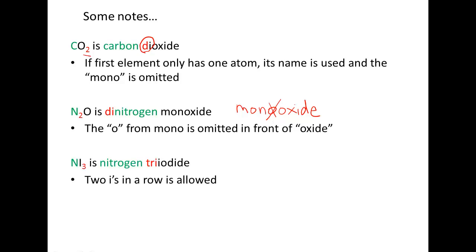Our third example is another one that may look odd to you. And that is nitrogen triiodide. So nitrogen does not get a prefix, once again, because it's the first element and there's only one of them. And then iodine gets the prefix tri because there's three of them. And notice you have two i's in a row. This is allowed.